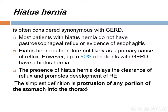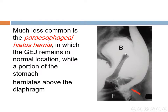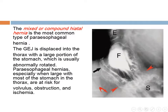The simplest definition of hiatal hernia is the protrusion of any portion of the stomach into the thorax. There are three types: the most common is sliding hernia where the gastroesophageal junction and stomach herniate above the diaphragm with widening of the esophageal hiatus to normally 15 mm. The less common type is paraesophageal hernia where the junction is below but part of the stomach is herniated. And we have the mixed or compound hernia type.